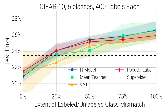Another issue with the way these algorithms are typically evaluated is that treating part of the labeled dataset as unlabeled results in a perfect matching between the classes in the labeled and unlabeled data. In some real-world scenarios, we can't guarantee that the labeled data has the exact same classes as the unlabeled data. To simulate this, we varied the amount of mismatch between classes in the labeled and unlabeled data and found the surprising result that performance of semi-supervised learning algorithms can actually become worse than the fully supervised baseline when there's a class mismatch.